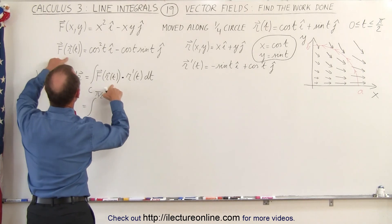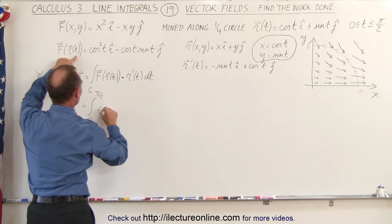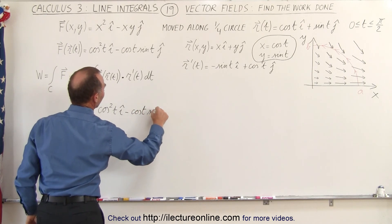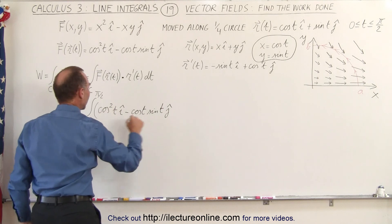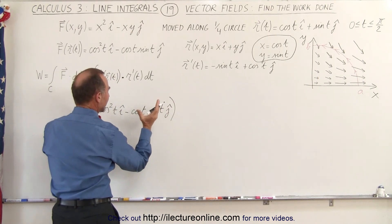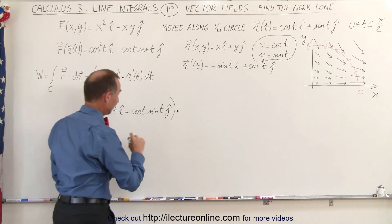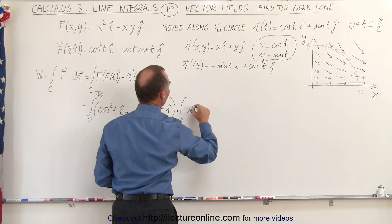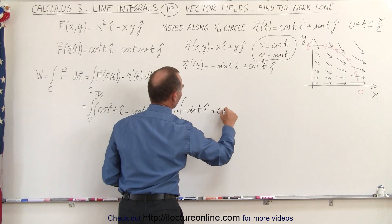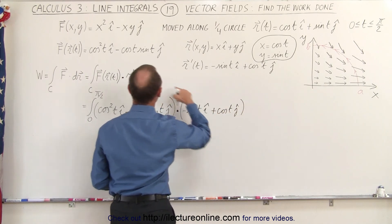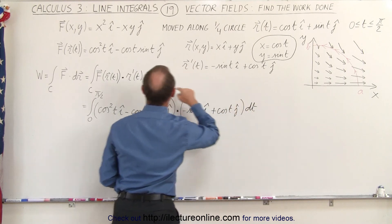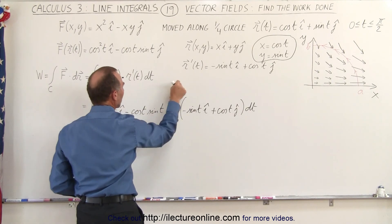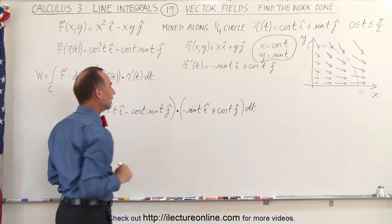We have the force vector in terms of the parametrized variable: cosine²(t) in the i direction minus cosine(t) times sine(t) in the j direction. We take the dot product of that with the derivative of the position vector, which is negative sine(t) in the i direction plus cosine(t) in the j direction. We still need a dt — that comes from r′ being the derivative of r with respect to t, written as dr/dt, with the dt moved over.